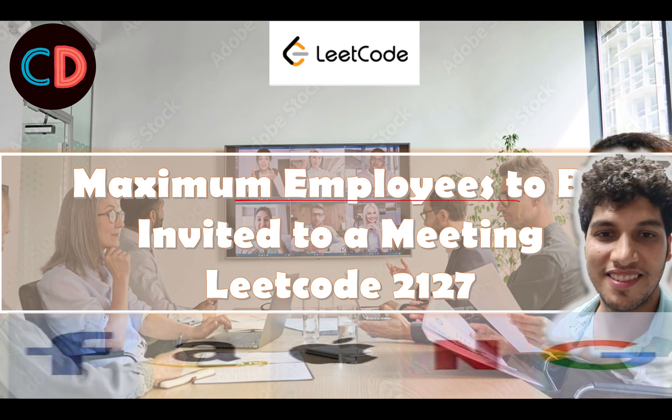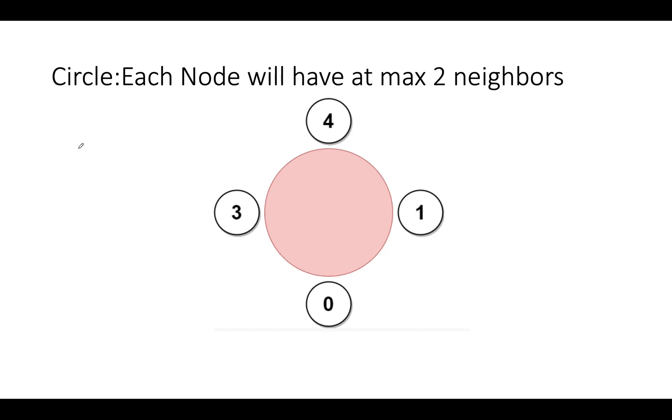Maximum employees to be invited to a meeting, LeetCode 2122. It's a hard question on LeetCode, however I would rate this in an extremely hard category. Let's try and understand the attributes of a circle so our basics are clear. Each node can have at max two neighbors. Consider any node of people sitting in a circle. Each one can have at max two neighbors. The neighbors can't go beyond two when forming a circular shape.